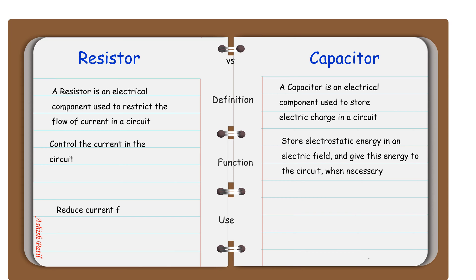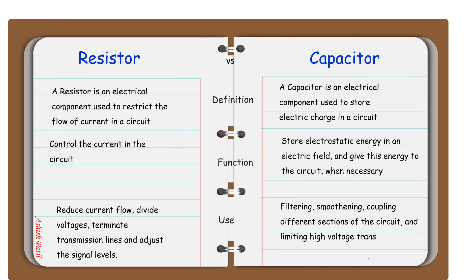Resistors are used to reduce current flow, divide voltages, terminate transmission lines and adjust the signal levels. Capacitors are used for filtering, smoothening, coupling different sections of the circuit, and limiting high voltage transients across the circuit.